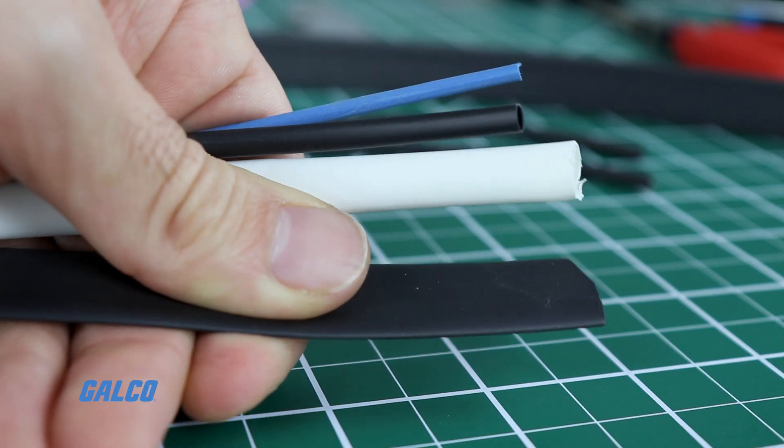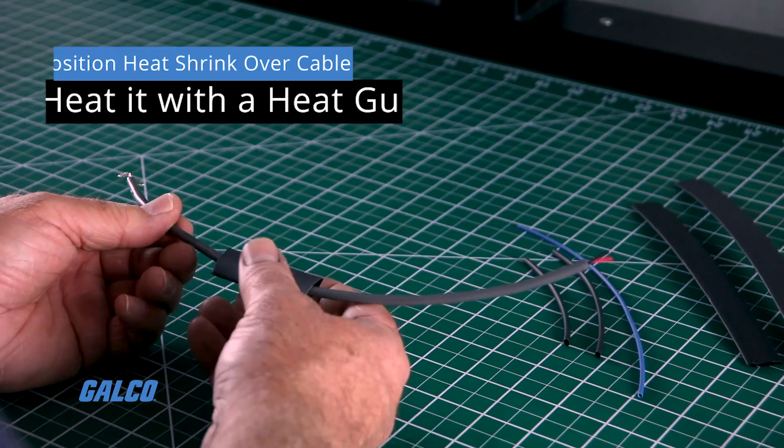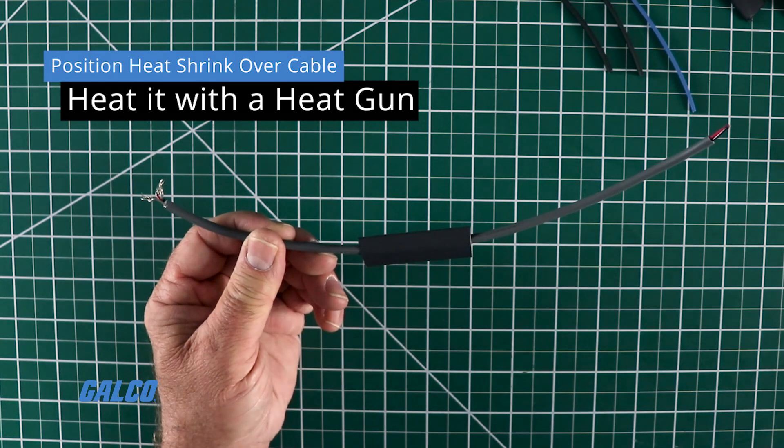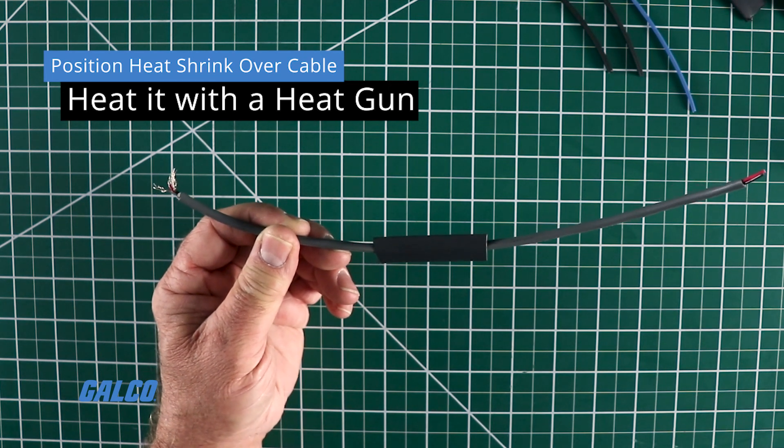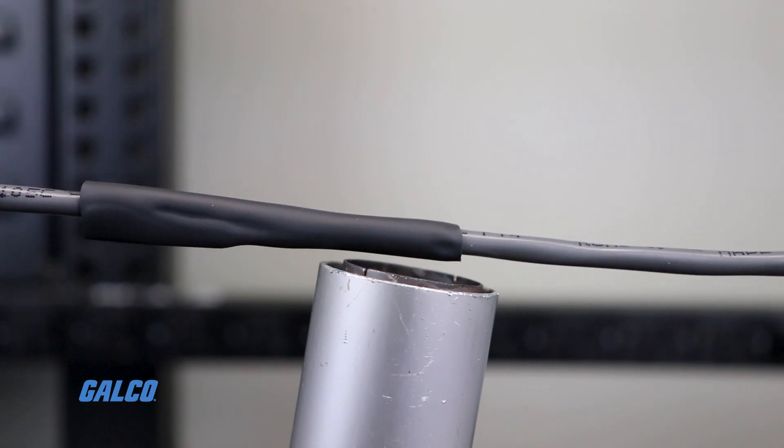A longer term solution is to heat shrink the cable. Once you have positioned your heat shrink over the damaged area of the cable, heat it with a heat gun or blow dryer and it will shrink to fit over the wire, causing it to immobilize and reinforce the damaged area.